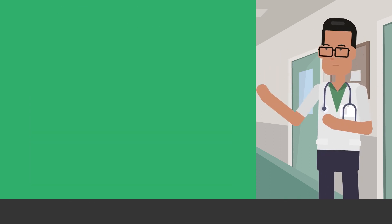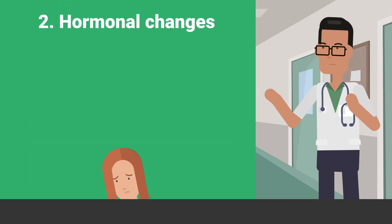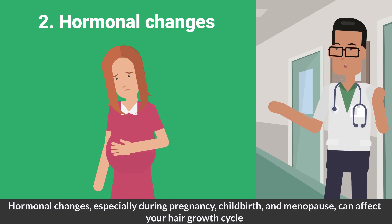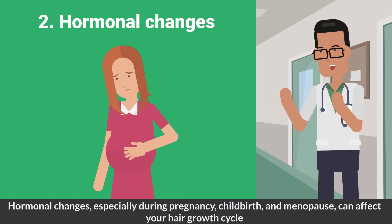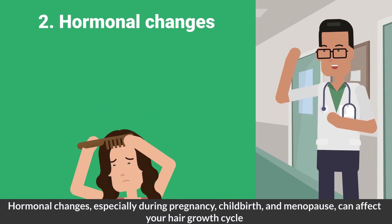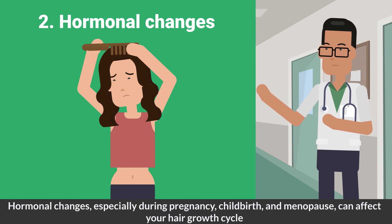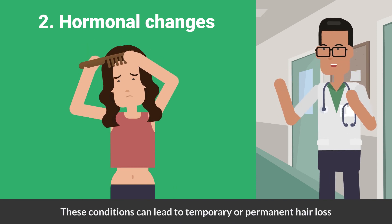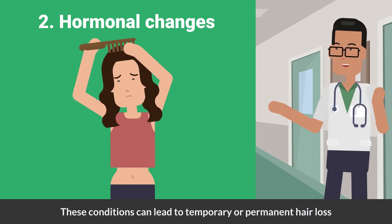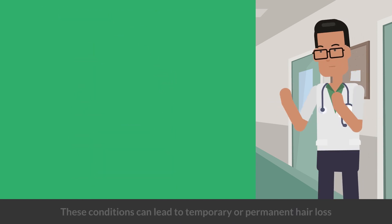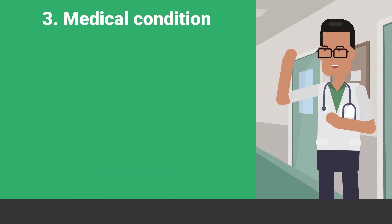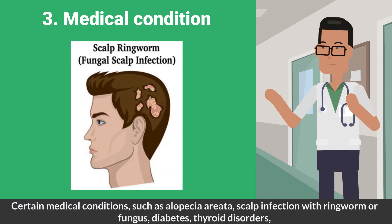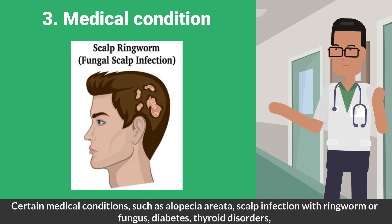Hormonal changes, especially during pregnancy, childbirth, and menopause, can affect your hair growth cycle. These conditions can lead to temporary or permanent hair loss.